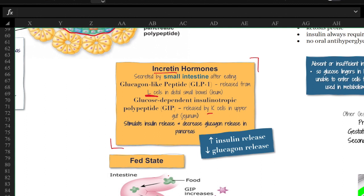One of them in the L cells, one of them in the K cells. I really wouldn't worry about memorizing that, it's not a big deal. But the idea is that they're released in the GI system and they're triggered after eating, by satiety.